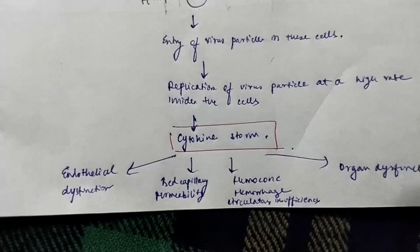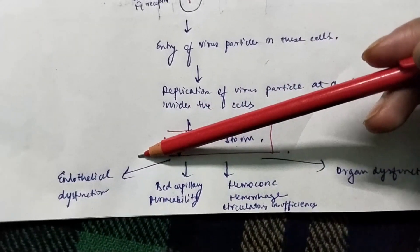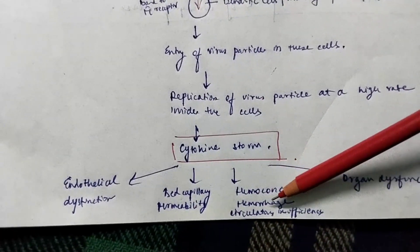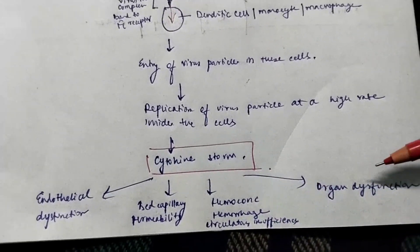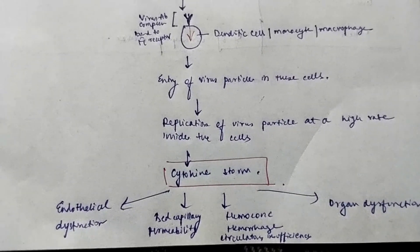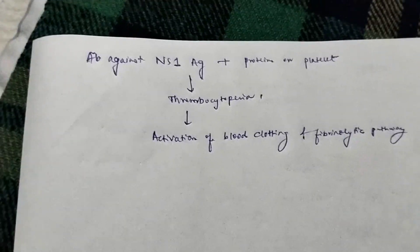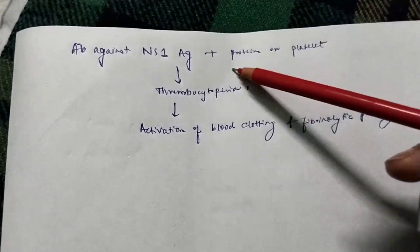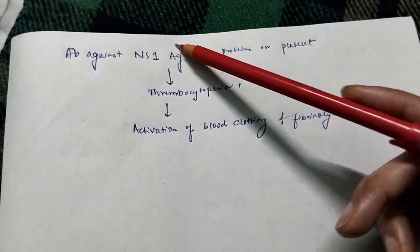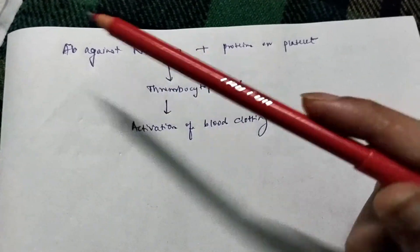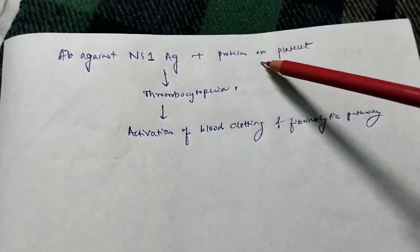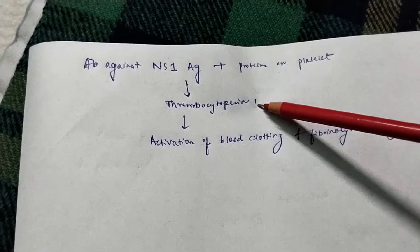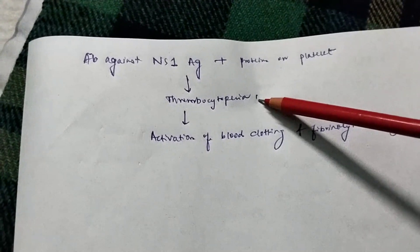This enhanced replication will lead to a cytokine storm. The cytokine storm produces the key features of severe Dengue: endothelial dysfunction, increased capillary permeability, hemoconcentration, hemorrhage, circulatory insufficiency, and organ dysfunction. Additionally, antibodies against the NS1 antigen — an antigen belonging to the Dengue virus — will bind with proteins on the surface of platelets, causing their destruction and reducing platelet count, resulting in thrombocytopenia.